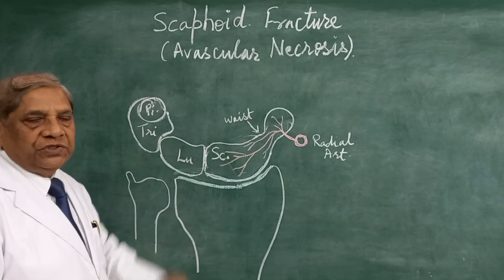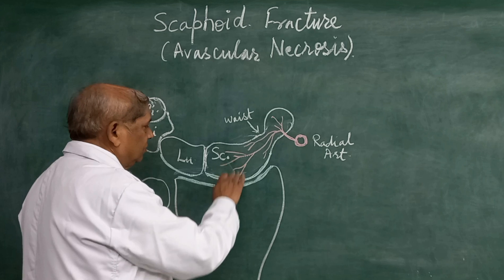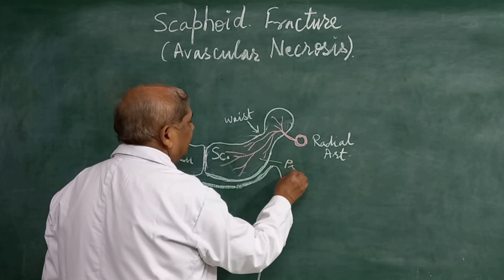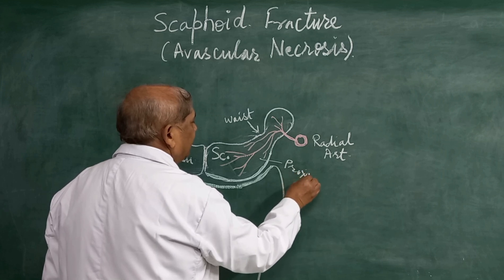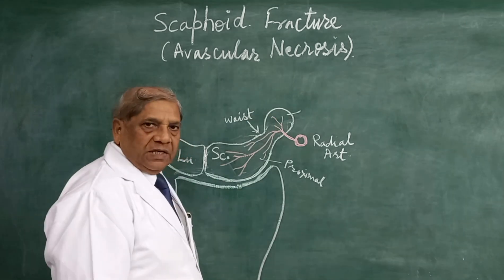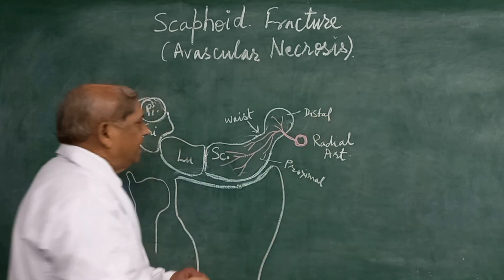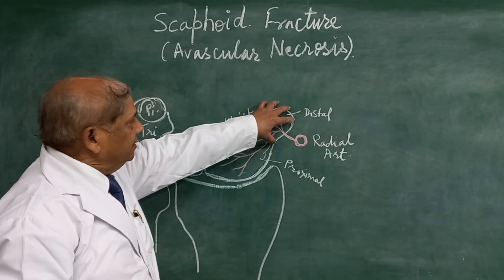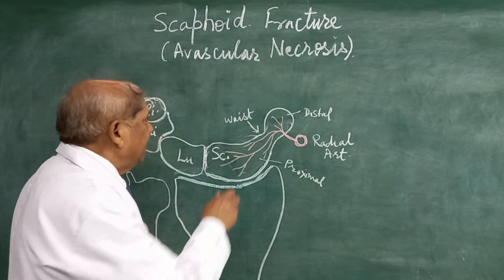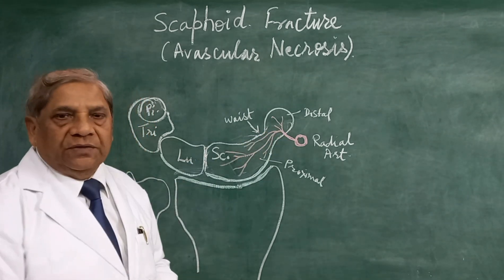This scaphoid bone, which is boat-shaped, has two parts. Since it is close to the radius, this is the proximal part of the scaphoid, and the part towards the metacarpal is the distal part. These two parts — the proximal and the distal — join each other by a narrow waist, called the narrow waist of the scaphoid bone.